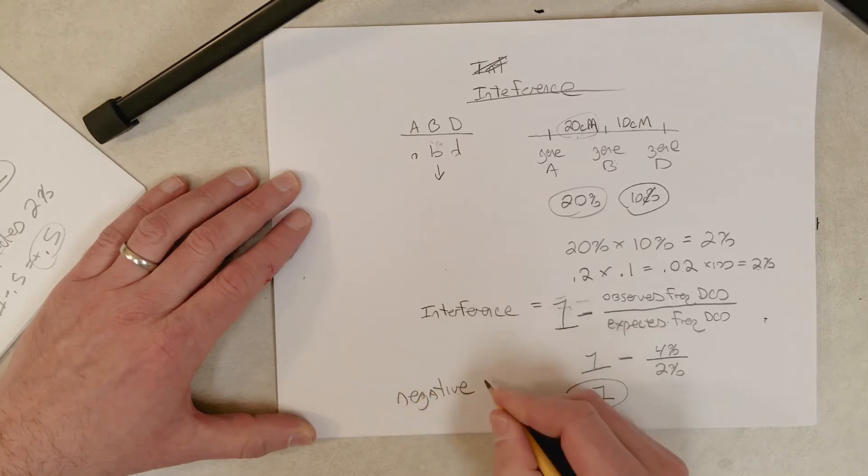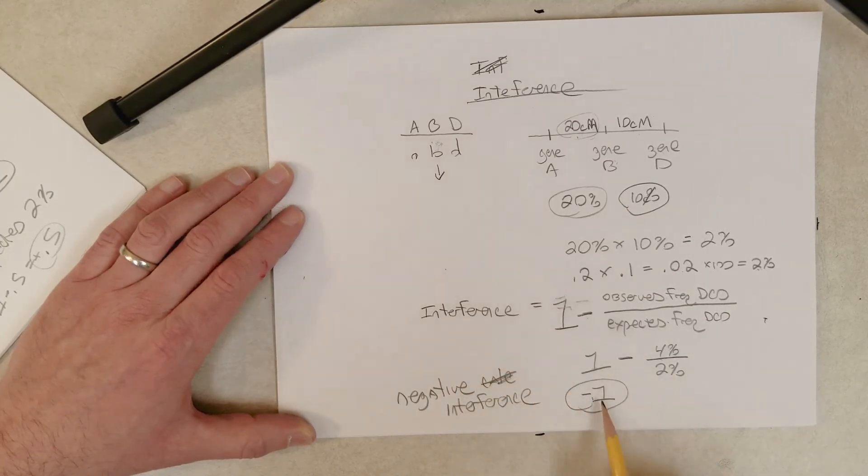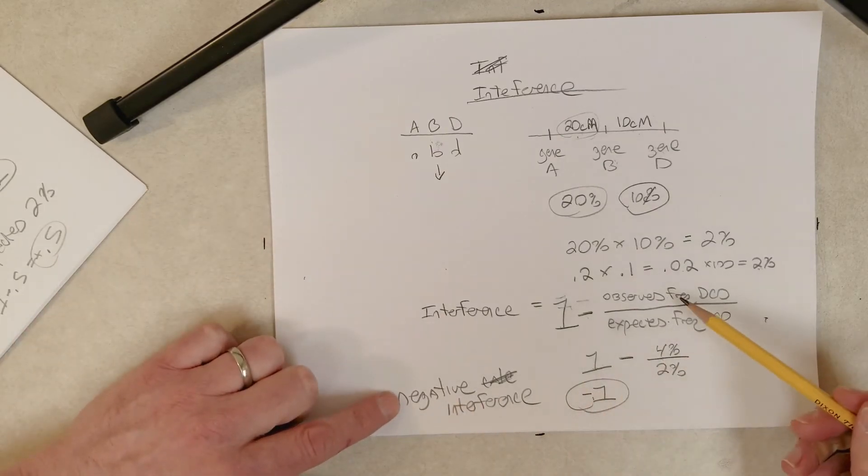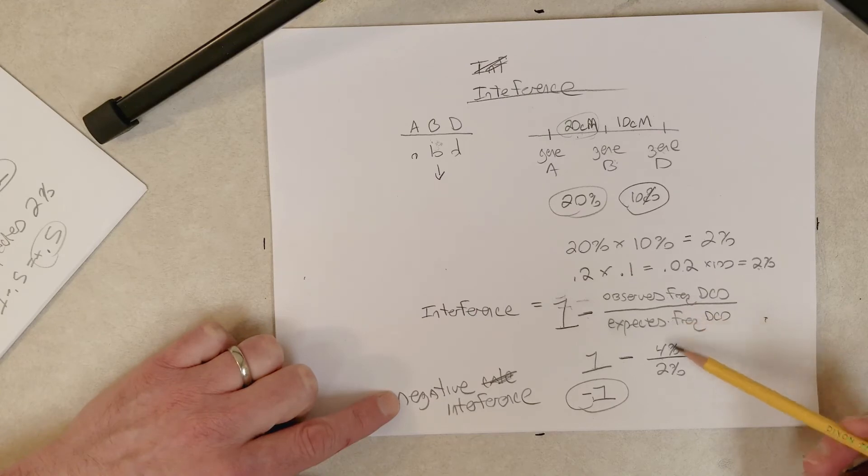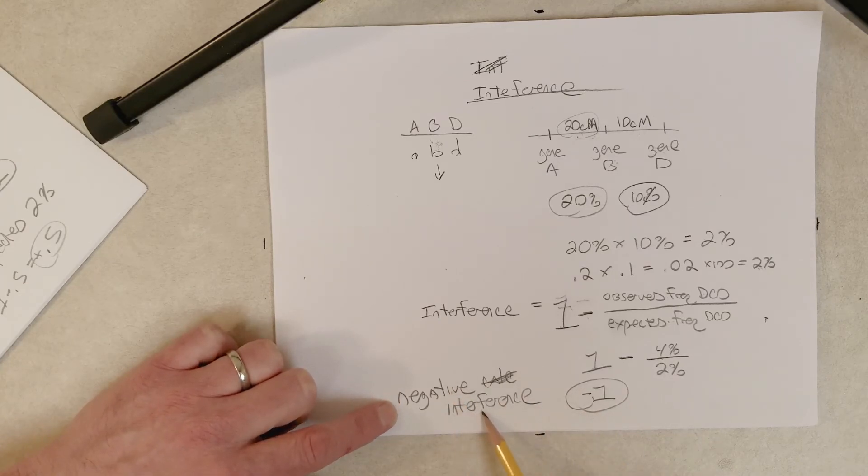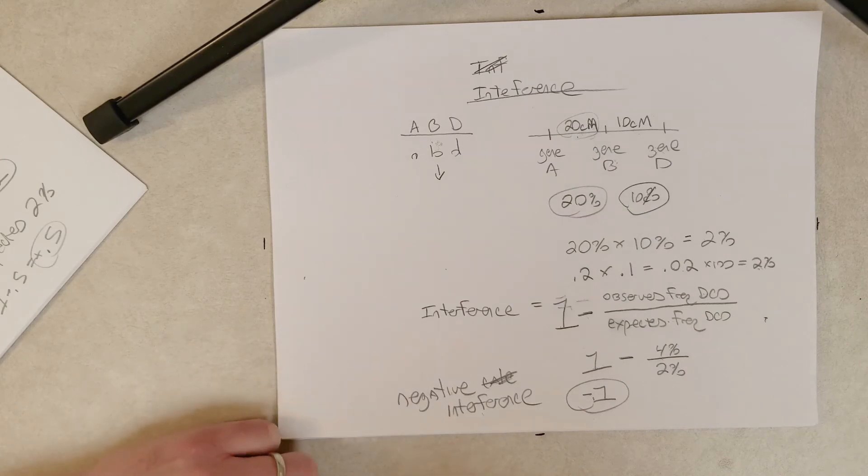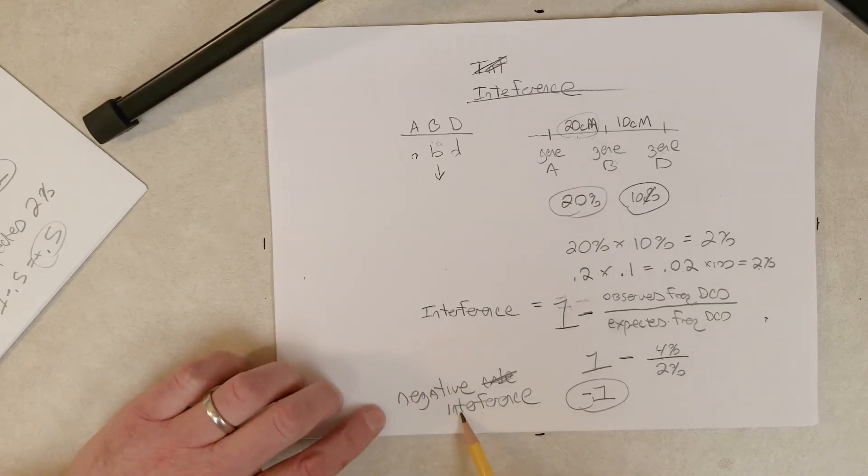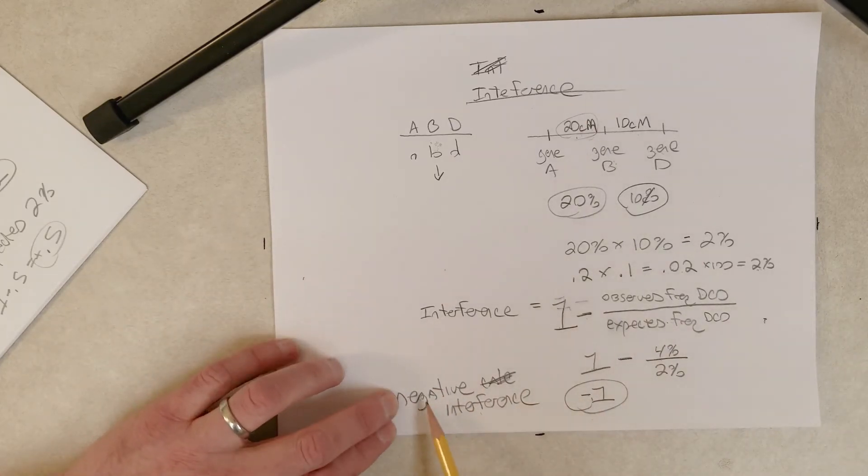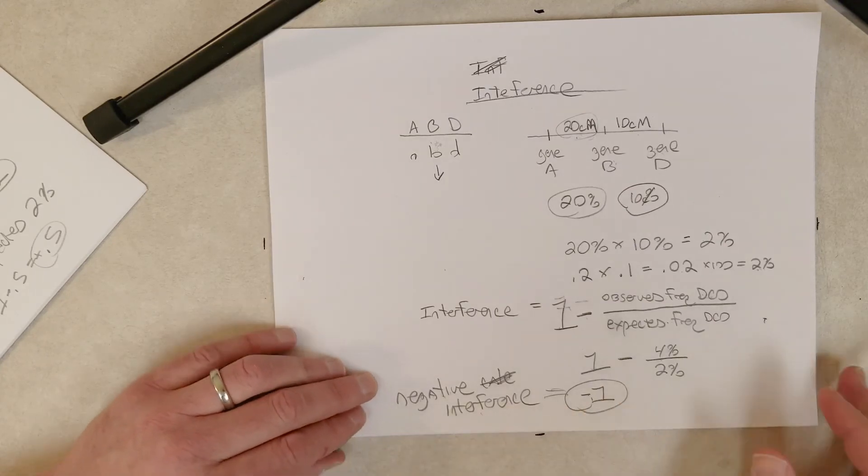And as long as you can do this calculation, and you know that observed frequency here is higher, when observed frequency of double crossovers is higher than the expected frequency, you're going to end up with a negative number. Negative interference is the state in which you are observing more double crossovers than you expect. When I think of interfering, I think of inhibiting. So negative interference is actually promoting more double crossovers, because we're seeing more than we would have predicted based on the genetic distances alone. Negative interference corresponds with a negative value, so that makes sense.